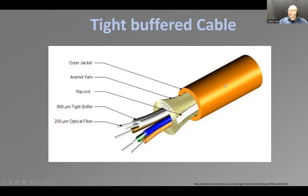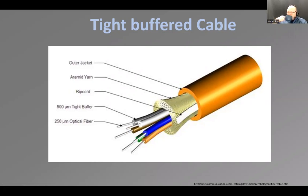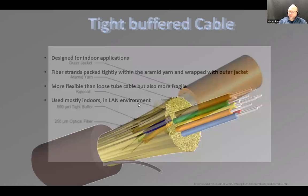An orange jacket indicates a multimode cable. An aqua or light blue jacket is also multimode but made to later specifications. A yellow jacket indicates single-mode fiber strands.